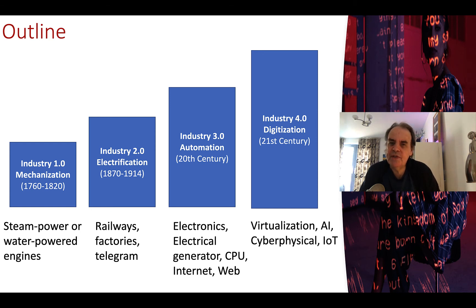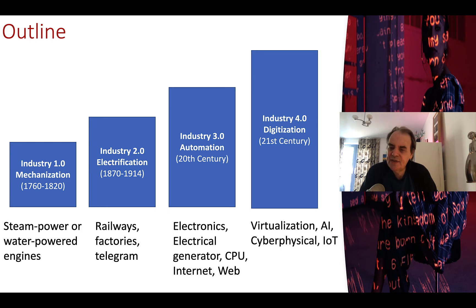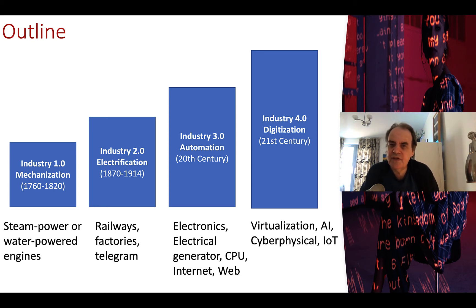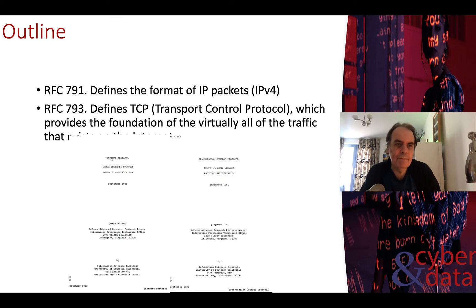Now we're in Industry 4.0, where we see digitalization, virtualization, artificial intelligence, cyber-physical systems, and the Internet of Things as key aspects of this fourth generation of industry. This often involves the virtualization of things that were once created through hardware but are now virtualized in software.